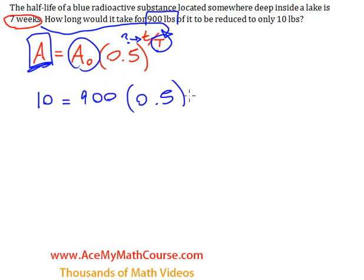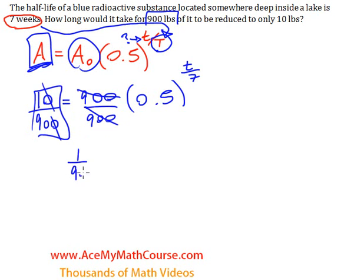We have 0.5 to the power of t over seven. Now I can divide both sides by 900. They cancel out, and we end up with 10 over 900, which simplifies to 1 over 90.